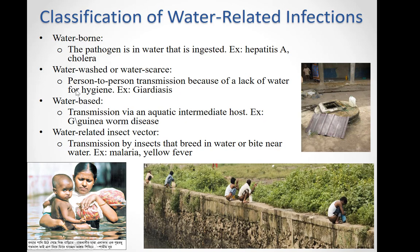Water-washed or water-scarce diseases happen when person-to-person transmission occurs because of a lack of water for hygiene — an example would be giardiasis. Water-based diseases involve transmission via an aquatic intermediate host, such as guinea worm disease. Water-related insect-vector diseases happen when transmission occurs by insects that breed in water or bite near water, with malaria and yellow fever as examples.